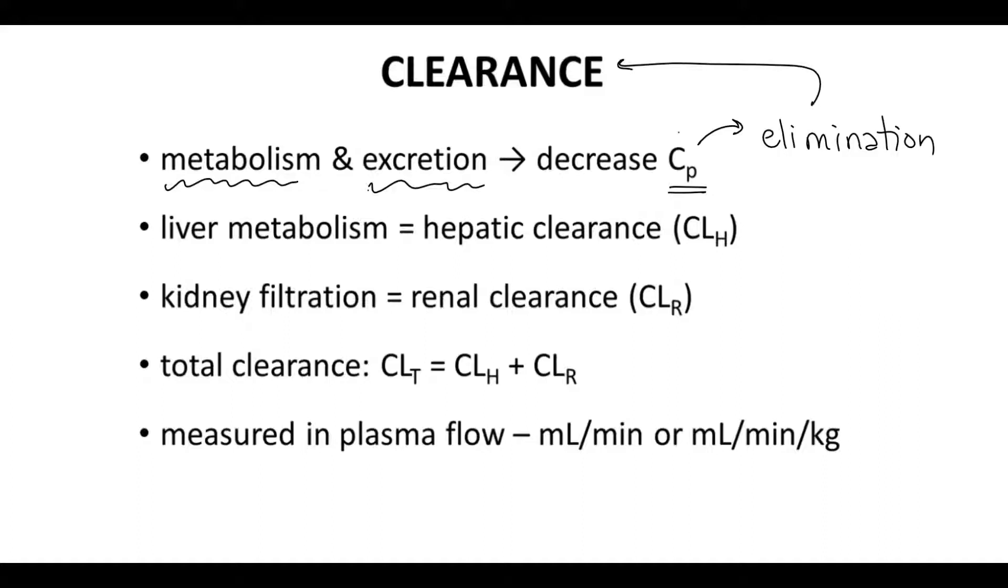Liver metabolism is referred to as hepatic clearance, that's CLH. Kidney filtration is renal clearance, that's CLR. The total clearance observed for a drug is going to be the sum of the hepatic and renal clearance. This is a little oversimplification because other organs and tissues can engage in clearance, but these are the two big ones.